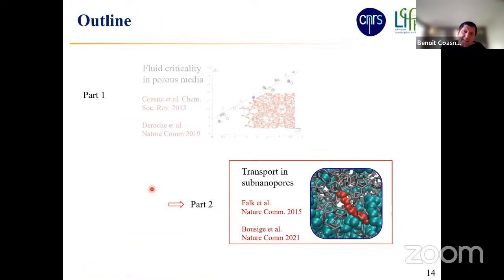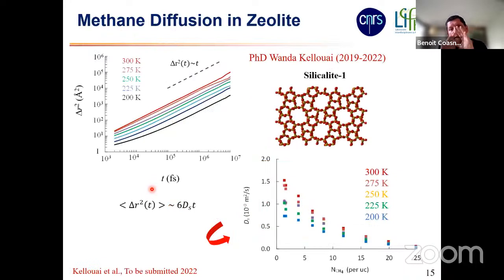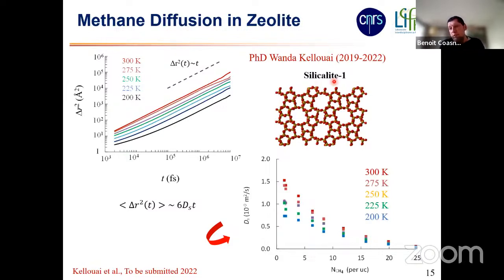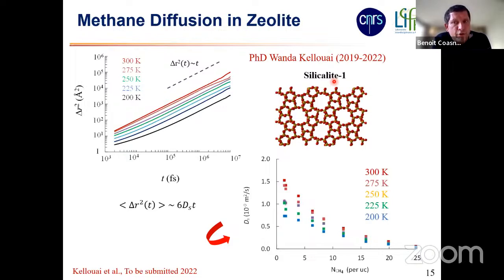In the second part of my talk, I would like to discuss briefly the transport part. For the sake of simplicity, we're going to stick to the same system — methane, a simple fluid inside a zeolite material. Silicalite is quite simple because it's a pure silica zeolite with no aluminum-to-silicon substitution and no charge balance with sodium or potassium cations. We want to check simple models to show that they can be used to predict diffusion and collective transport — permeability — of fluids in materials.